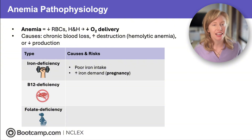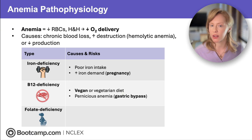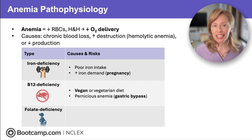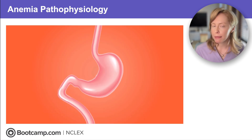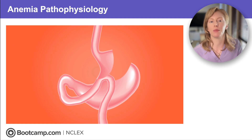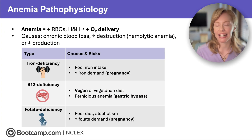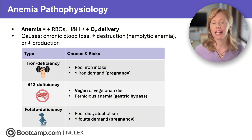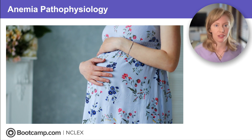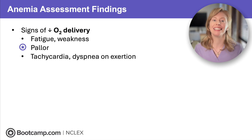Iron deficiency anemia is caused by poor iron intake or by increased iron demand like in pregnancy. B12 deficiency is caused by decreased animal intake like in a vegan or vegetarian diet, or by impaired absorption of B12 like in pernicious anemia — this occurs commonly after gastric bypass because bypass removes the parietal cells of the stomach, which produce the intrinsic factor necessary for B12 absorption. Folate deficiency is caused by decreased folate intake like in poor diet or alcoholism, or increased demand like in pregnancy, so pregnancy puts them at risk for two different kinds of nutritional deficiency anemias.